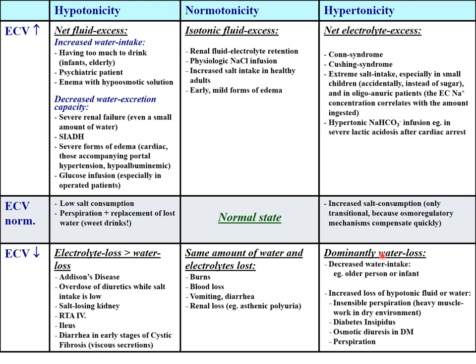Hypertonic hypovolemia — hypernatremic — occurs when too much water is lost, especially in elderly persons or infants. Elderly people may not feel the urge to drink, particularly in summer, leading to hypernatremia.